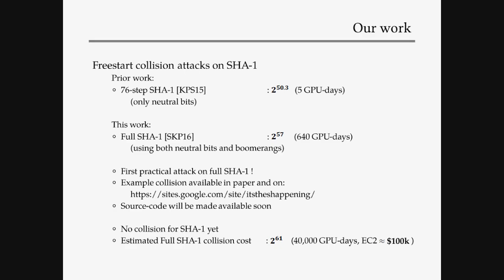In this work, we've really built on top of this and extended our GPU framework. Now we can also do boomerangs — a much more advanced type of message modification technique — to cover the full 80 rounds. It's well known that covering more rounds of SHA-1 makes the attack complexity increase very quickly. But nevertheless, with the additional tool of boomerangs, finding freestart collisions for full SHA-1 only takes about 640 GPU days. We actually built a cluster of 64 GPUs — 60 machines, just regular desktops with four graphics cards inside — and it took only about 10 days to do this computation.